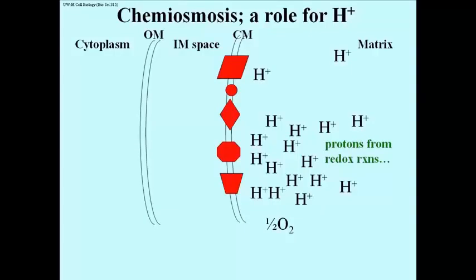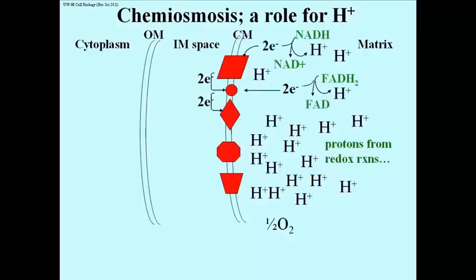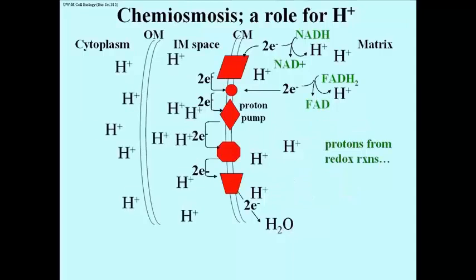This slide shows what happens when electrons flow from NADH or FADH2 to oxygen down the electron transport system. As electron carriers are oxidized and the electrons move down the electron transport chain, the free energy released powered proton pumps in the cristal membrane that pump protons into the space between the cristal membrane and the outer membrane.